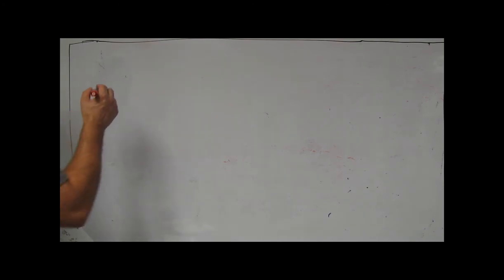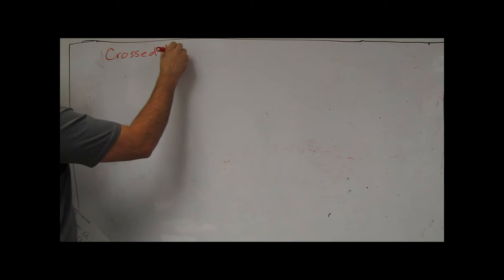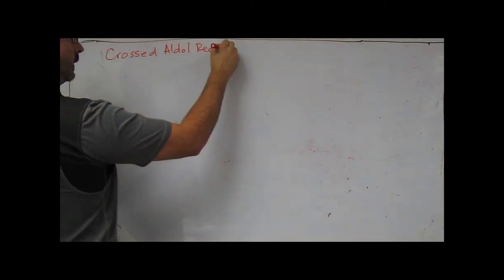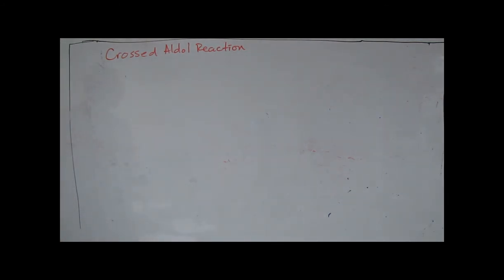In this tutorial video, we'll talk about the crossed aldol reaction. Specifically, we're going to look at the aldol reaction between two different aldehydes. And what we'll see, as we logically produce our electrophile-enolate table, is that we can get a very complex mixture from this reaction.